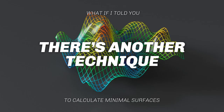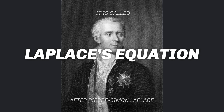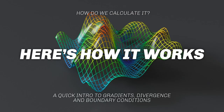But there's another technique to calculate minimal surfaces: solving what's called the Laplace equation, named after French mathematician Pierre-Simon Laplace of the 18th and 19th century. The canonical example deals with heat flow — showing the heat distribution in a metal plate heated on the top edge, which can be calculated using Laplace's equation. In our case, we want to use it to build a minimal surface.